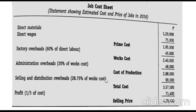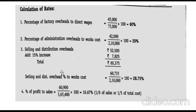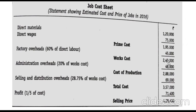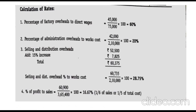Selling and distribution overhead percentage from the working note is 28.75 percent on works cost. Works cost is 2,40,000, so 2,40,000 into 28.75 percent equals 69,000. Cost of production 2,88,000 plus selling and distribution overhead 69,000 gives total cost of 3,57,000.